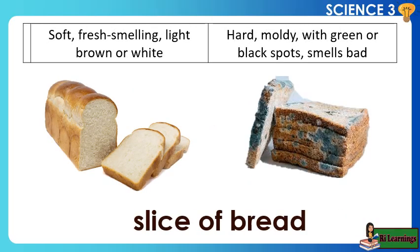Slice of bread: Before disposal — soft, fresh smelling, light brown or white. After three days of disposal — hard, moldy, with green or black spots, and smells bad.